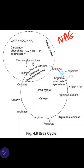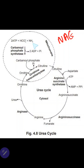In the third reaction, the amino nitrogen from aspartate reacts with citrulline in the presence of arginosuccinate synthetase enzyme, resulting in the formation of arginosuccinate, and two inorganic phosphates are utilized. In the structure of urea there are two nitrogen atoms — one nitrogen comes from ammonia and the other comes from aspartate.